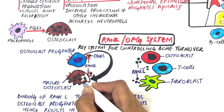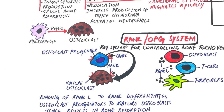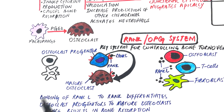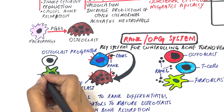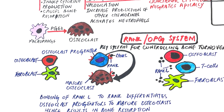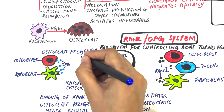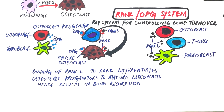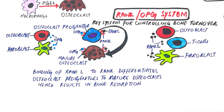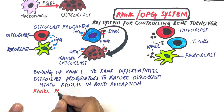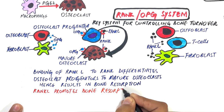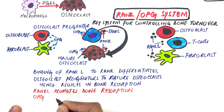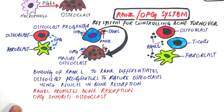Another ligand that binds to RANK is OPG or osteoprotegerin, produced by osteoblasts and fibroblasts. OPG inhibits the differentiation of osteoclasts. Thus RANK-L and OPG are both cytokines that bind to the RANK receptor and result in cellular responses in opposite ways: RANK-L promotes the activation and differentiation of osteoclasts, while OPG inhibits osteoclastic maturation and their activation.